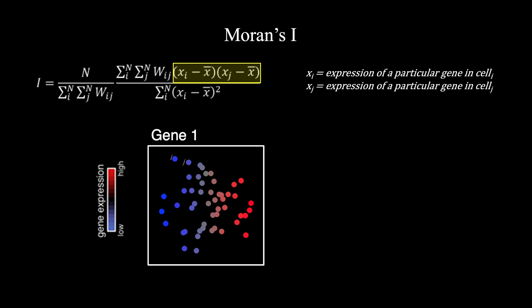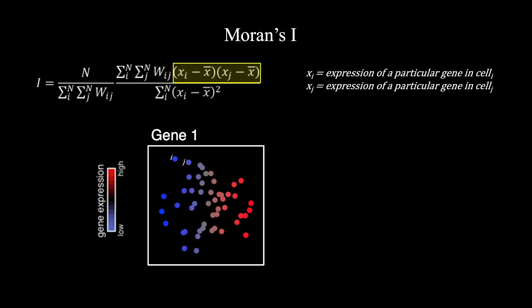Consider these two cells, I and J. They are adjacent to each other, so W_IJ is 1, and their gene expression magnitude is lower than average, as shown in blue, resulting in negative values for both (X_I minus X-bar) and (X_J minus X-bar). Two negative numbers multiplied together are positive, so these two cells will contribute positively to the Moran's I statistic for this gene.